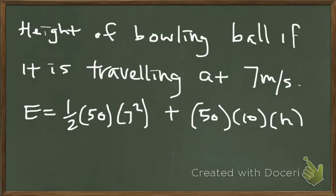Now let's say I want to find the height of the bowling ball when it's traveling at 7 meters per second. I'll plug 7 into the velocity slot and leave the height blank.